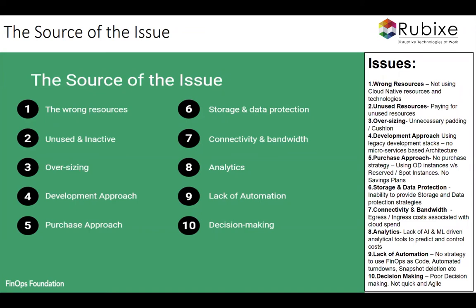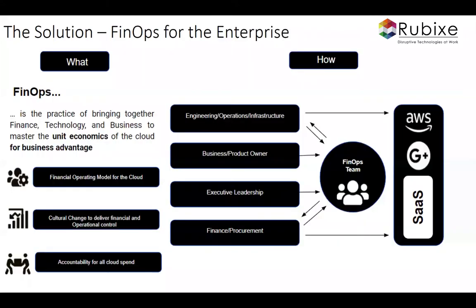Moving on — now that we understand the sources of the issue, how do we tackle this? How do we ensure we're spending right and not unnecessarily enriching cloud providers? The solution is something called FinOps. FinOps is a term coined by Gartner, and it's becoming a fast-adopted strategy for cloud spending today, with multiple enterprises implementing it.